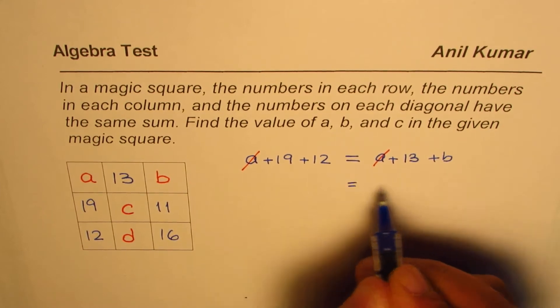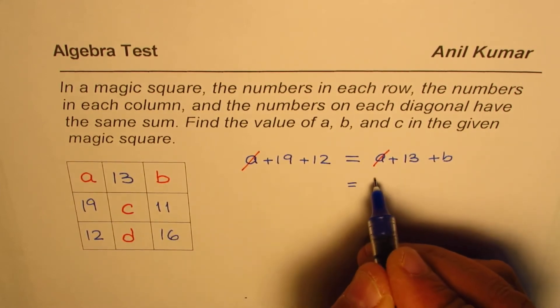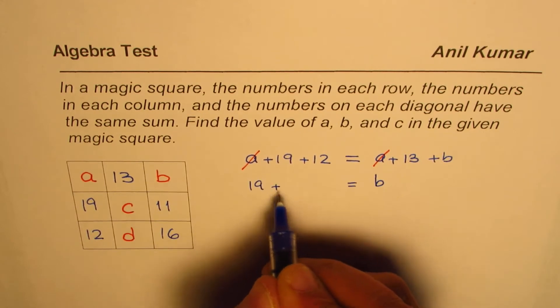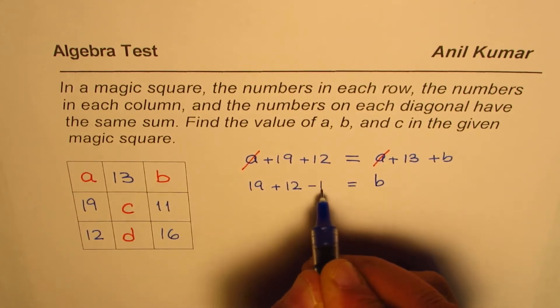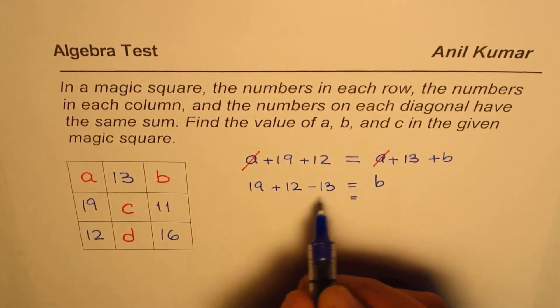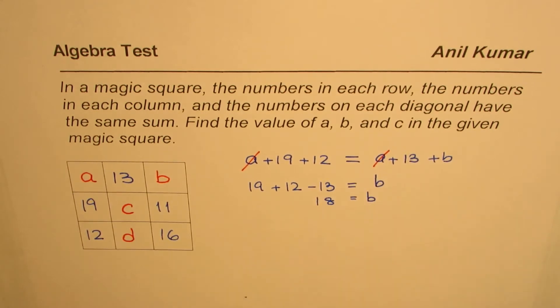Now we can write, taking 13 to the left side, B equals 19 plus 12 minus 13. That gives us 18 as the value for B.